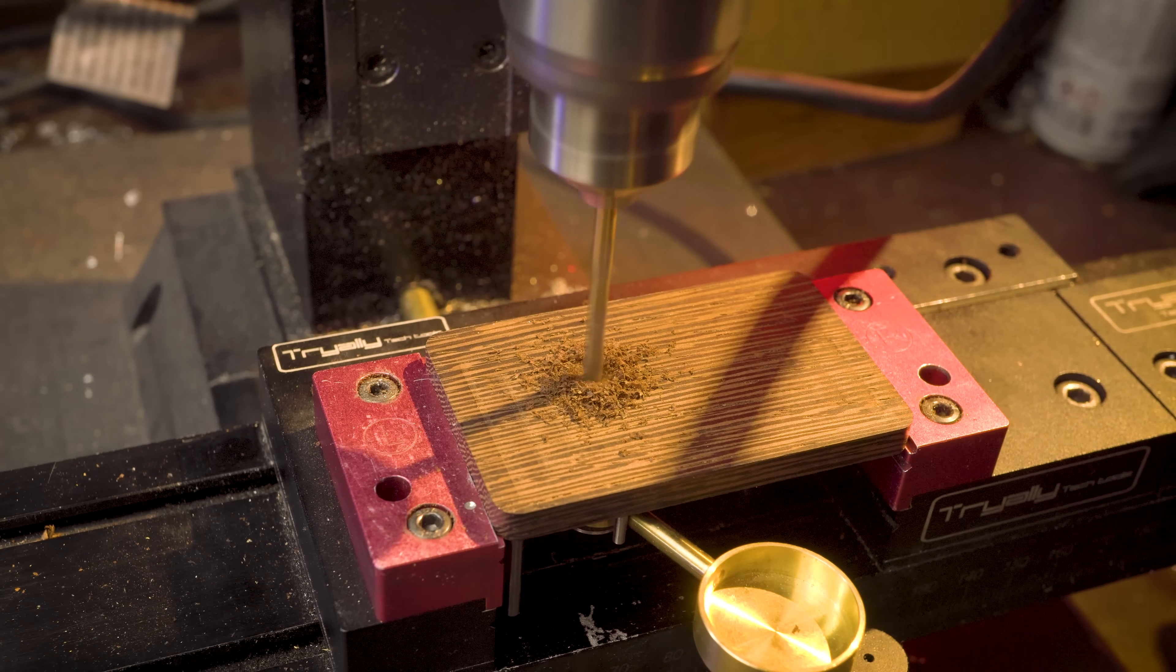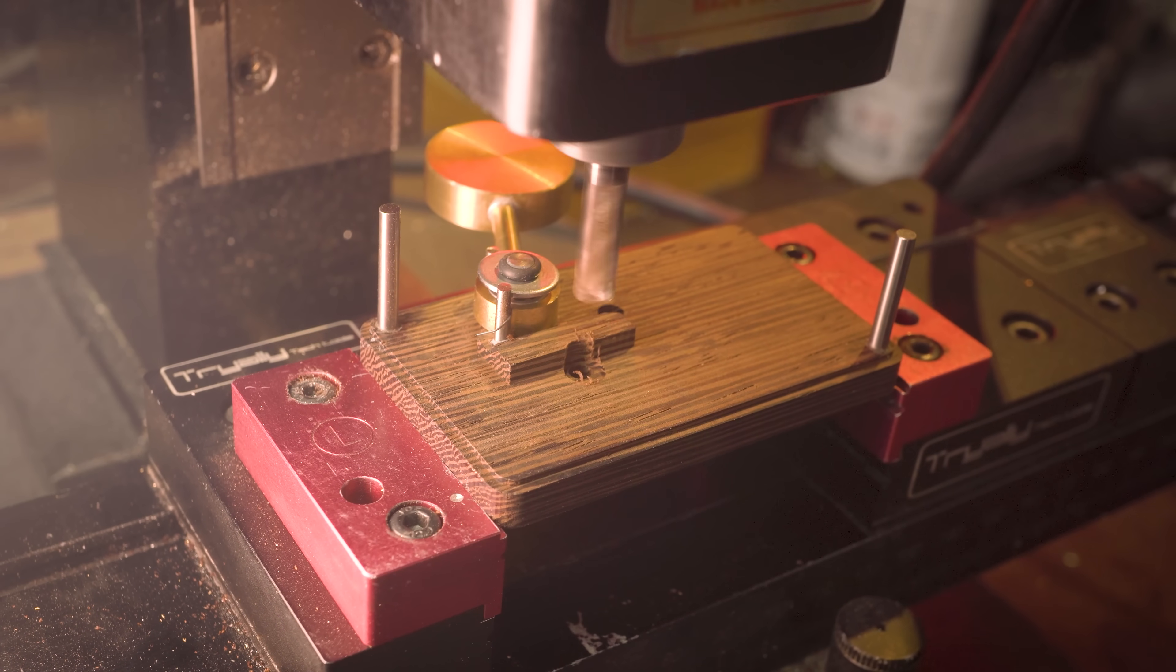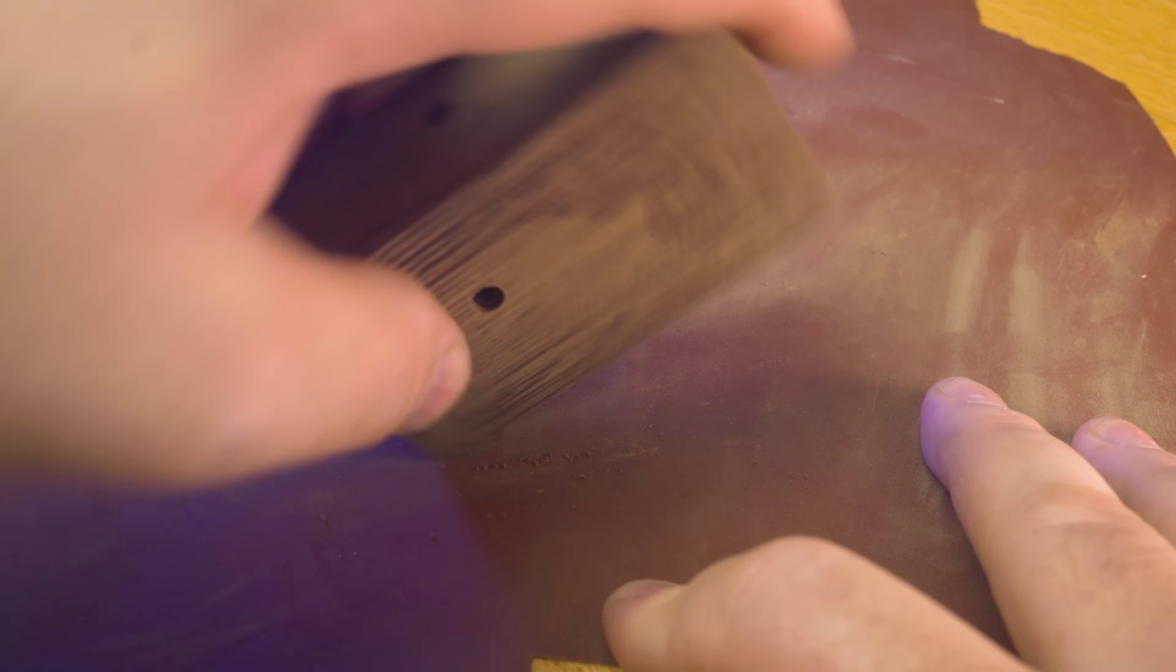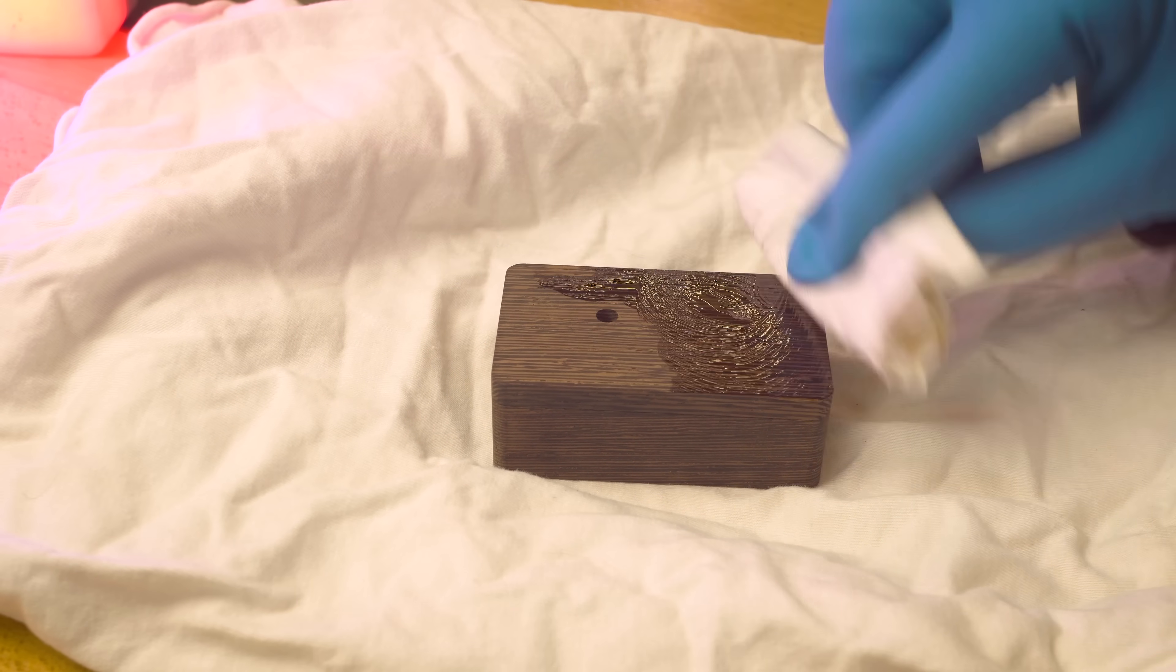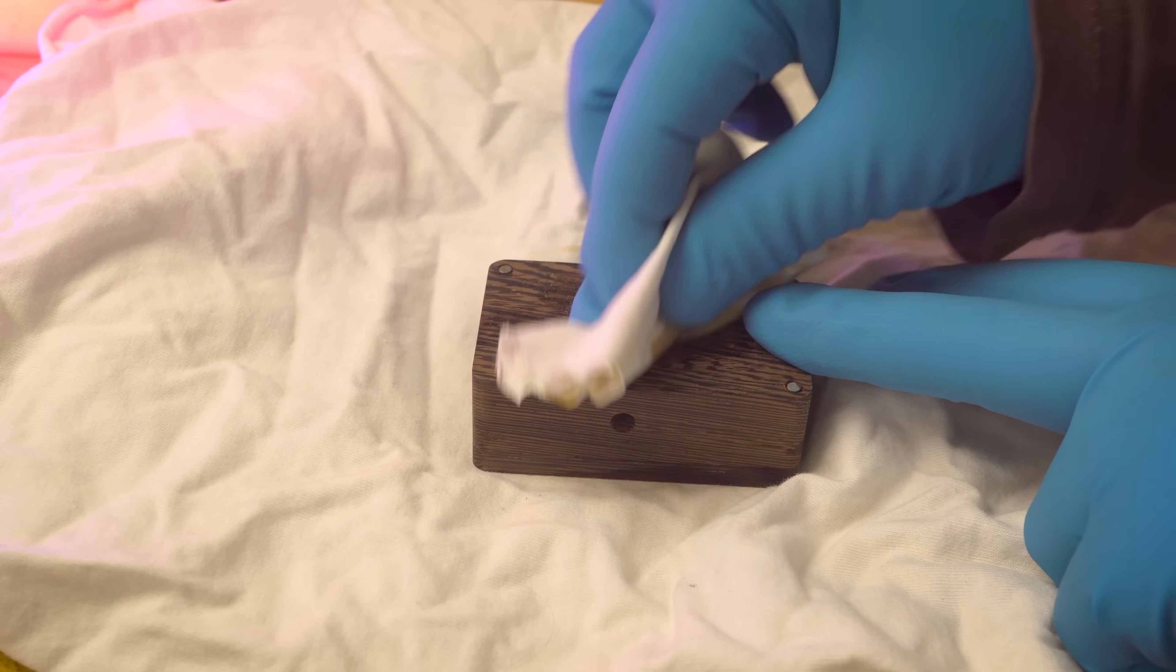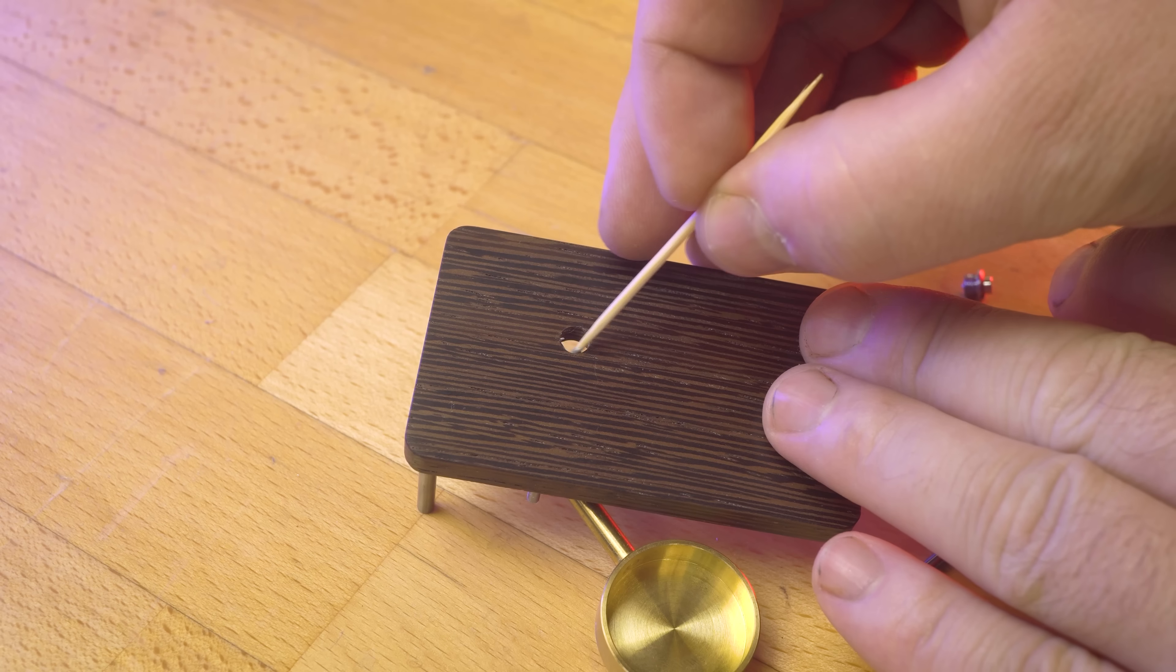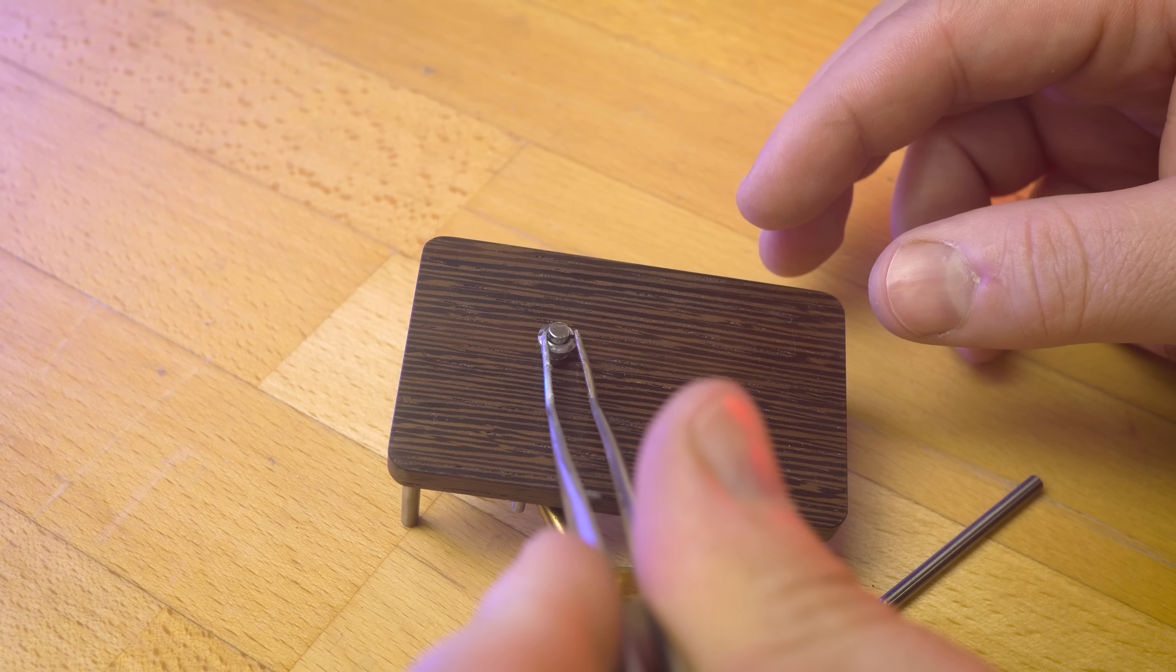We drill a hole in the lid from above, there will be a button here. We also lightly mill the hole from the bottom. Since the main operations are over, you can start grinding. And after that, we cover it with a mixture of oil and varnish. Now the texture appears much better, and the color is more noble. Of course, the video does not fully convey this. I decided to take the button from the camera too, so it will be more authentic.